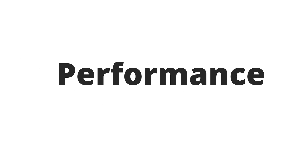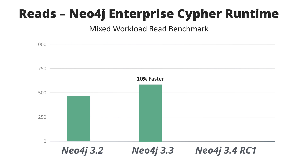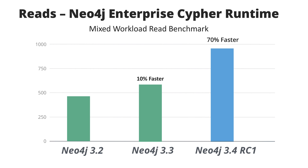As with all releases, in Neo4j 3.4 we've made a number of improvements to performance. If you look at a read benchmark in a mixed workload environment, you can see that from Neo4j 3.2 to 3.3 we improved performance by 10%. For this release, we've spent the last several release cycles working on an entirely new runtime for Neo4j Enterprise. In Neo4j 3.4, we've made all queries use this new runtime, and that improves performance by roughly 70% on average.